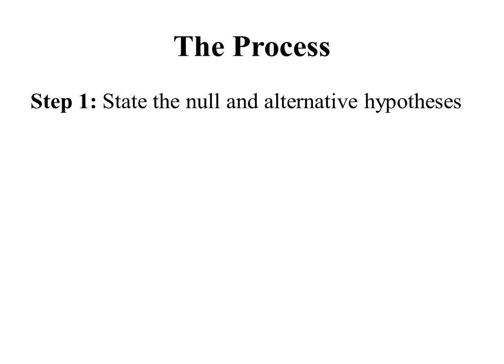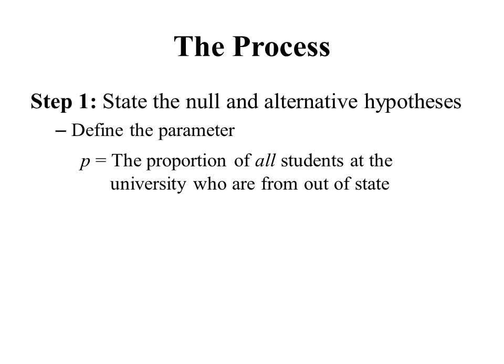Step one in the process is to state the null and alternative hypotheses. Before we state these hypotheses, we first need to define the parameter — what it is we're making a claim about. In this case we're making a claim about a proportion, so our parameter is p: the proportion of all students at this university who are from out of state. We stress the word 'all' because we're making a claim about all students, not just the 95 in our sample.